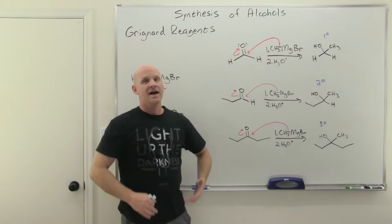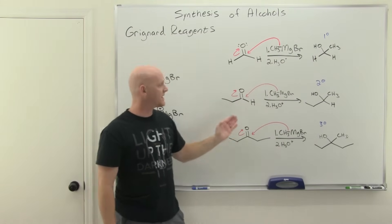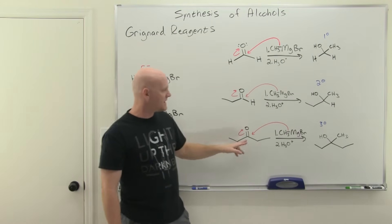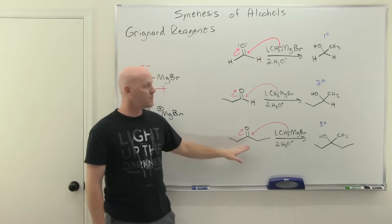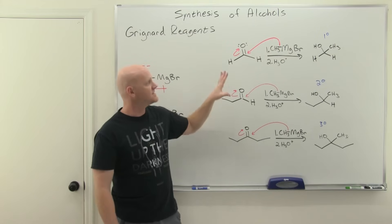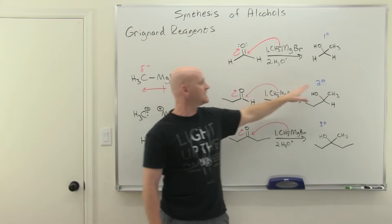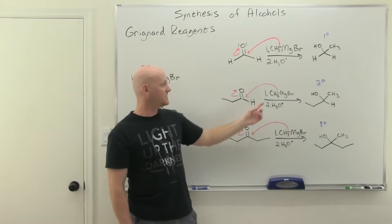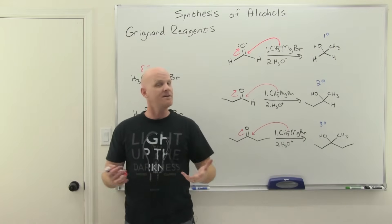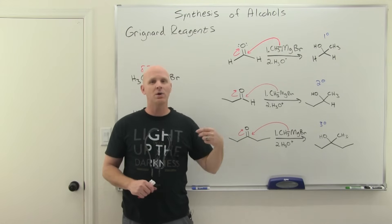With the ketone, the methyl group attacks the carbonyl carbon, kicks the pi electrons up to the oxygen, giving a single bond to oxygen with the new methyl group attached. The acid workup protonates the alkoxide intermediate, and we form a tertiary alcohol. To make a primary alcohol, start with formaldehyde; for secondary, choose the correct aldehyde; for tertiary, start with the appropriate ketone.